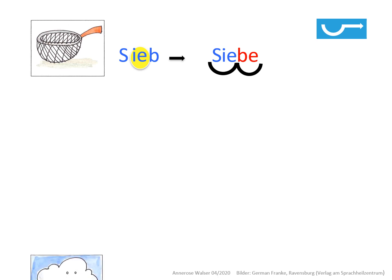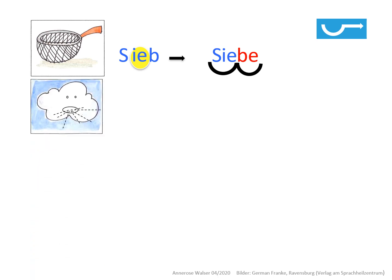Ein nächstes Beispiel: Wind – ein einsilbiges Wort. I oder IE? Wir bilden wieder die Mehrzahl: WINDE. Du siehst sofort, nach der Lücke für das I oder das IE folgt ein weiterer Buchstabe, das N. Ich setze also daher das I ein.